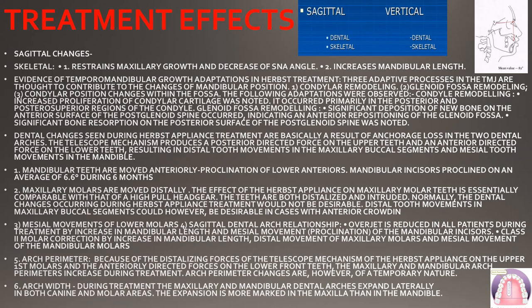Now, what are the treatment effects? They have sagittal and vertical effects, and within those, dental and skeletal effects. Starting with the first — sagittal skeletal changes — the Herbst appliance restrains maxillary growth because we are using it in a Class 2 case. It restrains maxillary growth and decreases the SNA angle. The mean value for SNA is 82 degrees; if it is more than this, it is a Class 2 case. So the Herbst appliance reduces this SNA angle.